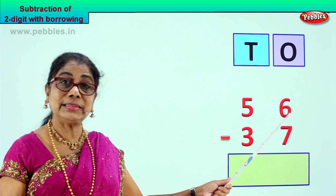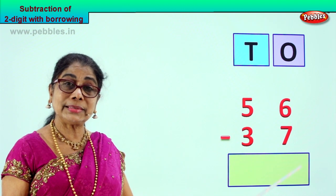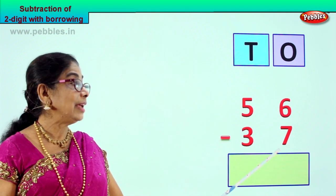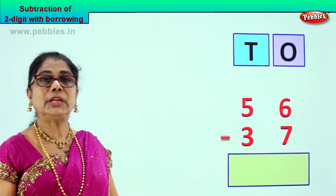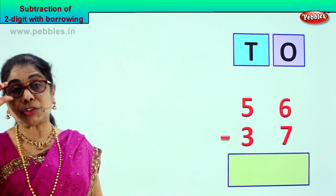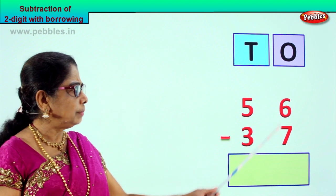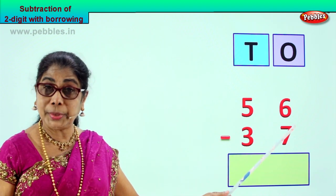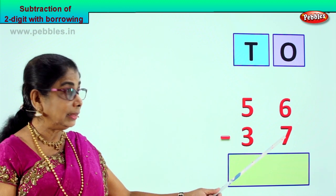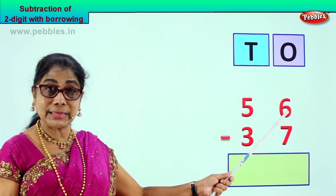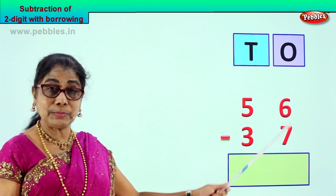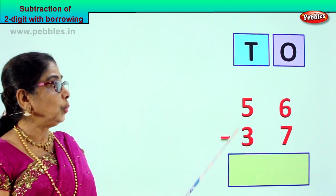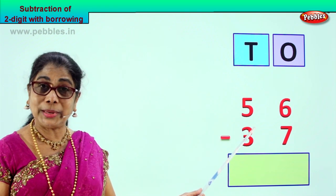Now we have 6 ones here and 7 ones. 6 is small, 7 is a big number. You cannot, in subtraction, say 6 minus 7 — no. The top number should be a big number, only then you can take away this number. Since the 6 is small, 6 minus 7 cannot happen. In subtraction here, what we are going to do — from the 10's place, we are going to borrow.